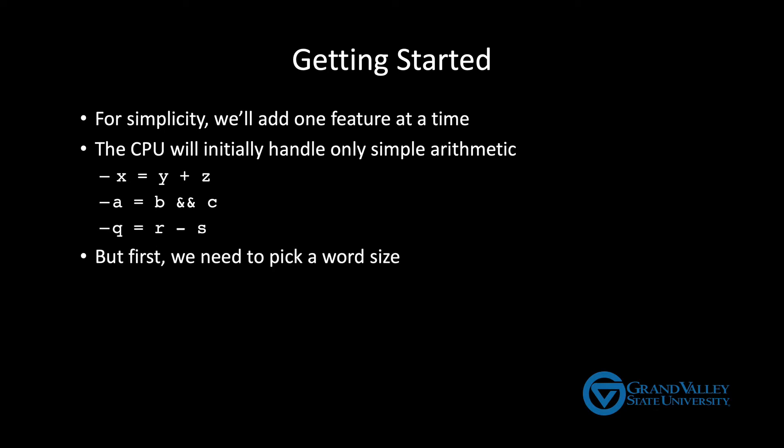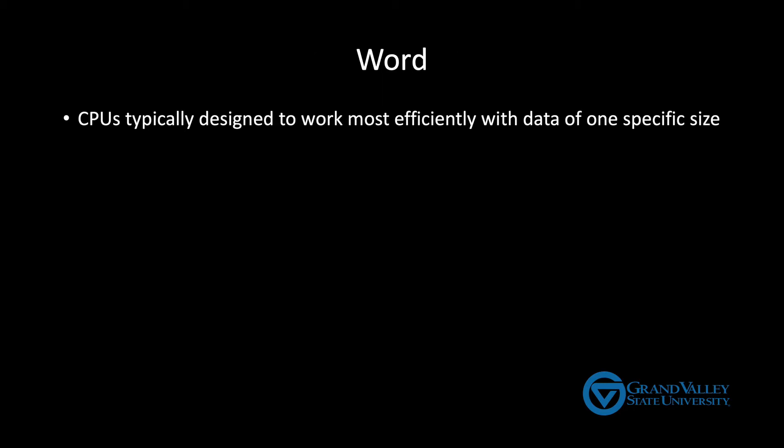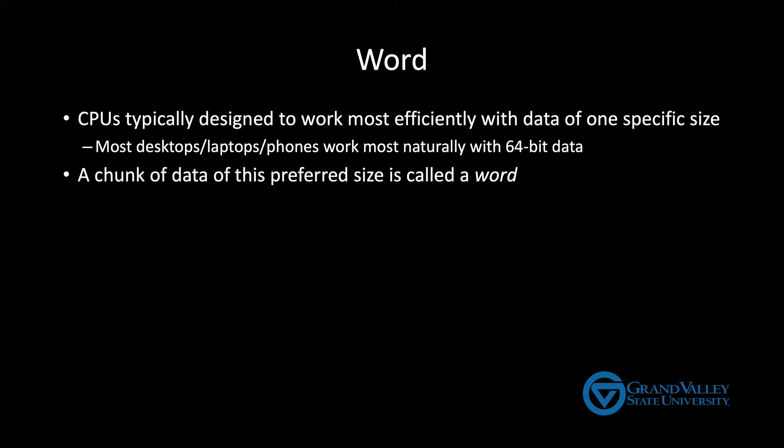The first thing we need to do is pick a word size. For reasons that will become clear in a minute, most CPUs are designed to work most naturally with data of a specific size. For example, most desktops, laptops, and phones today work most naturally with data that's up to 64 bits long. A chunk of data that's the preferred size for a CPU is called a word.